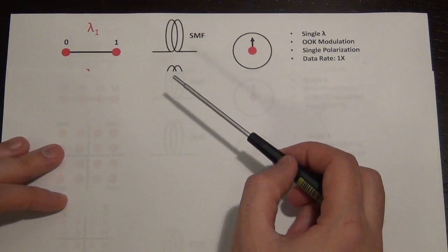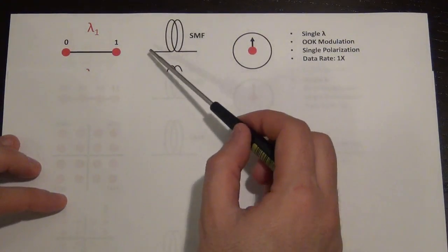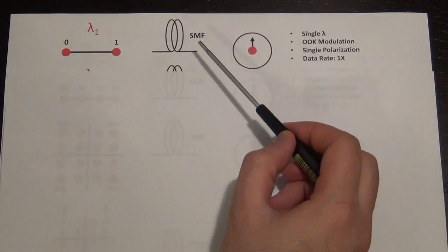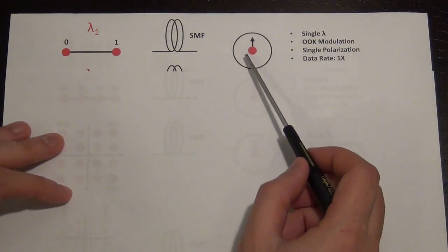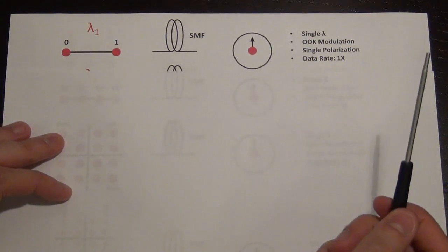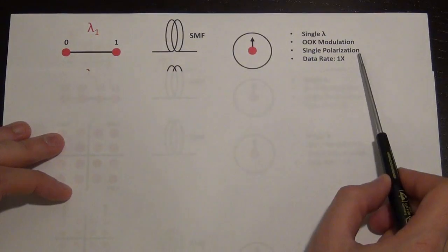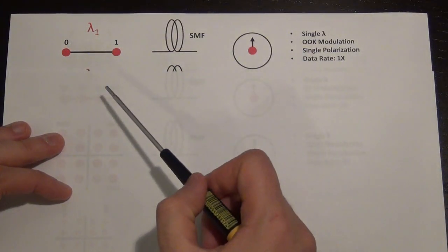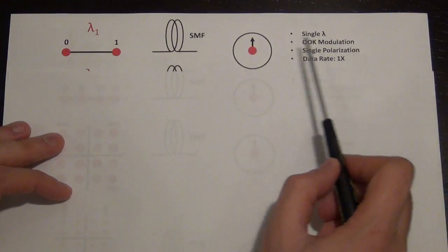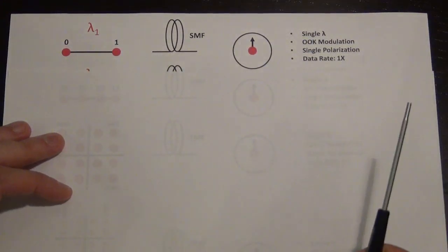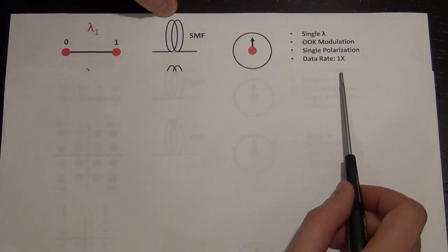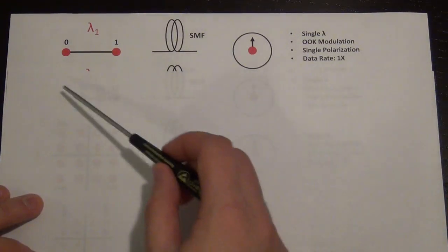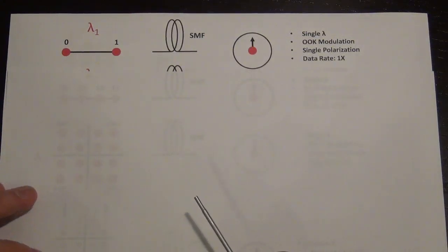For this simple communication scheme you use a single mode fiber and a single polarization direction. Single mode fiber is not polarization-maintaining, meaning the output polarization will be scrambled, but that doesn't matter because we're using an intensity detector — a square-law detector — to detect the zero and one anyway. So with OOK we have single wavelength, single polarization, and a normalized data rate of 1x.